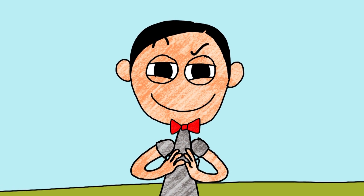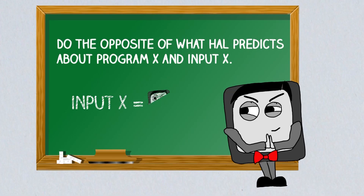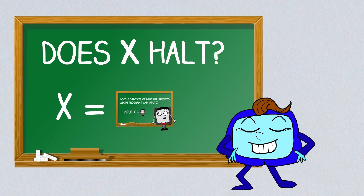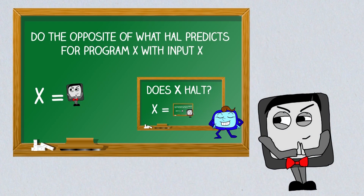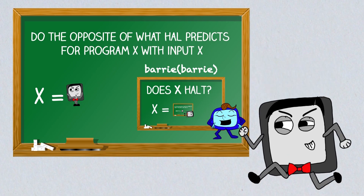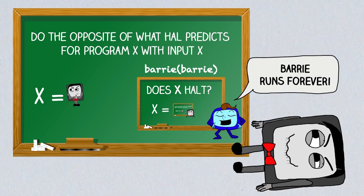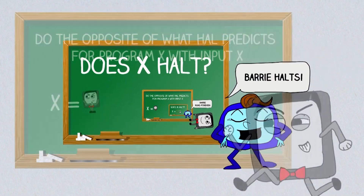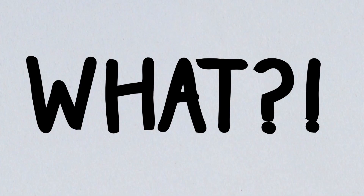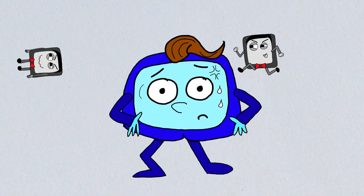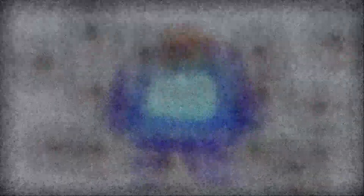Now the genius thing that Turing did was ask Barry to use itself as input. So just like before, he needs to look at what Hal would say so he can do the opposite. He runs Hal with program and input Barry. And if Hal returns 'Barry halts,' then Barry will run forever. And if Hal returns 'Barry runs forever,' he'll halt. So: if Barry halts, Barry runs forever. And if Barry runs forever, Barry halts. We've reached an impossible contradiction — Barry can't both run forever and halt.